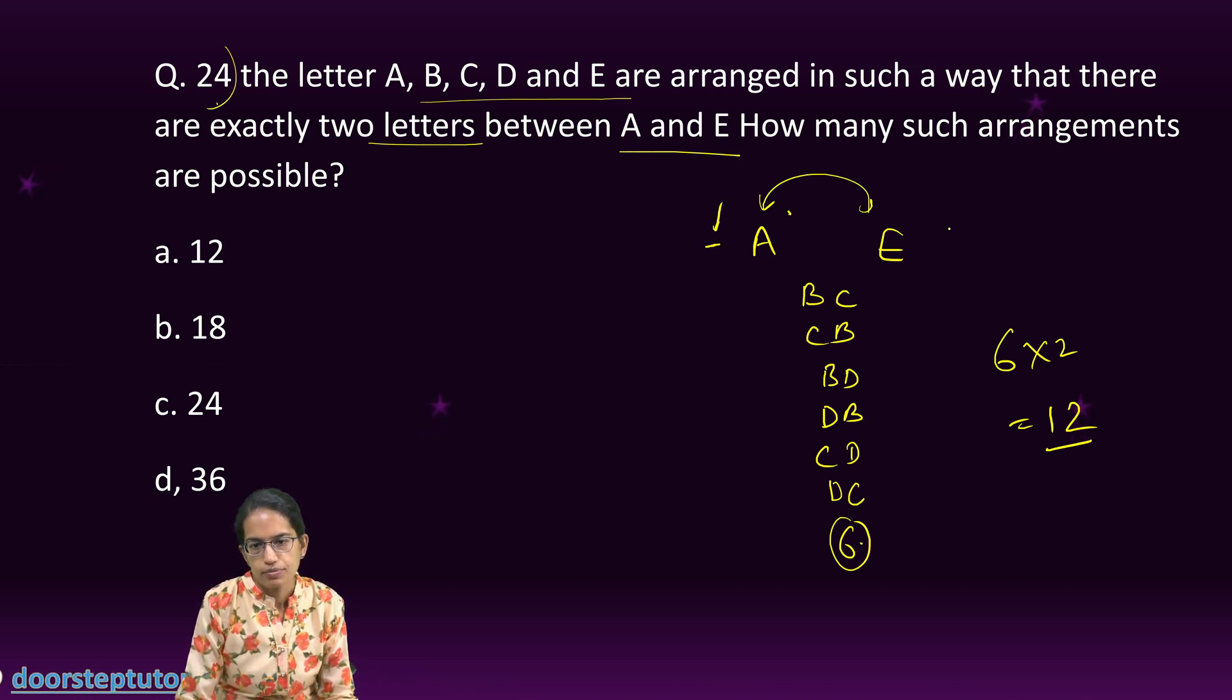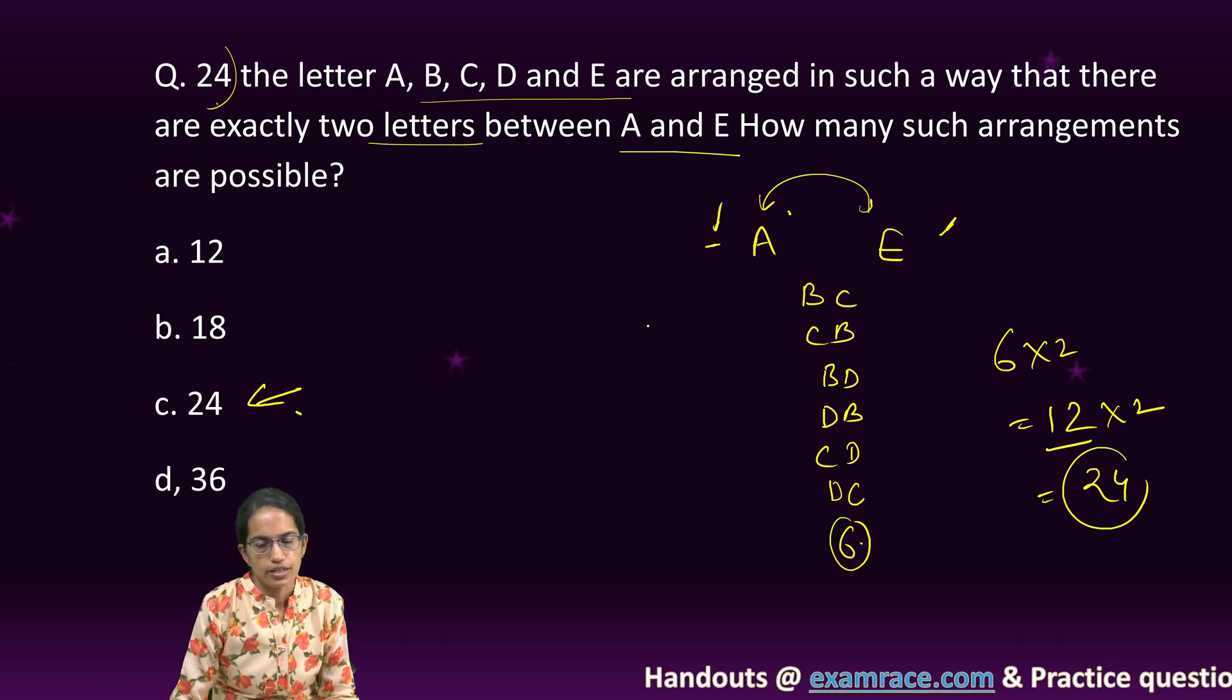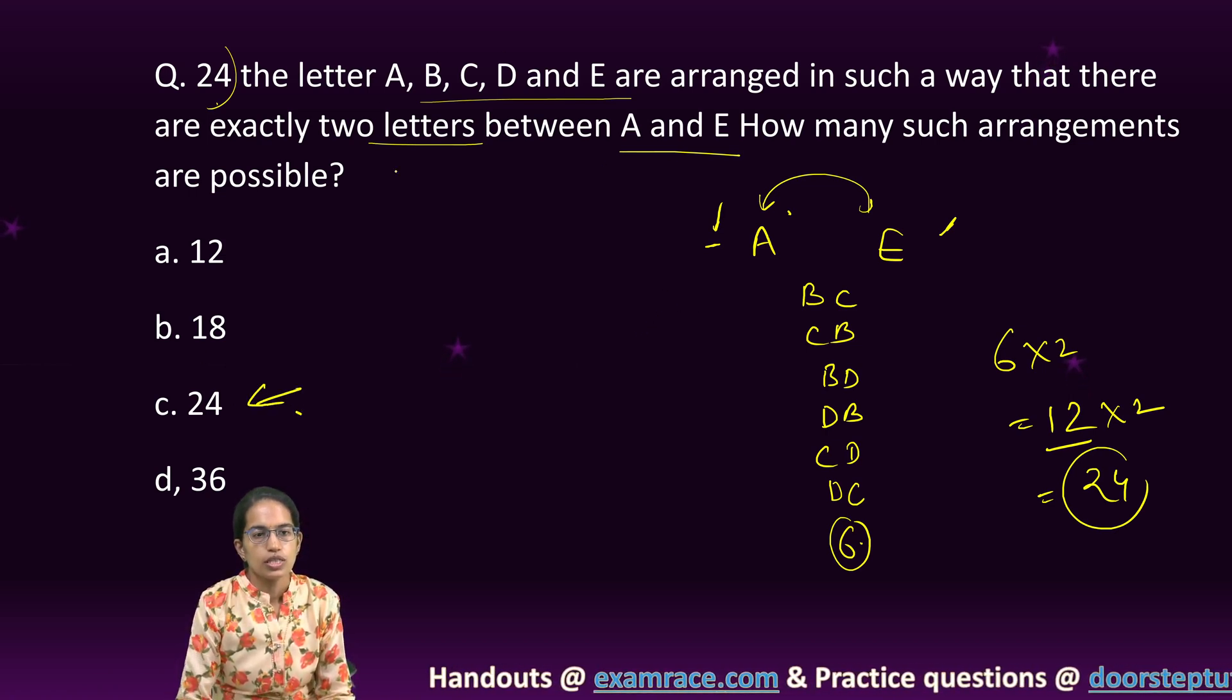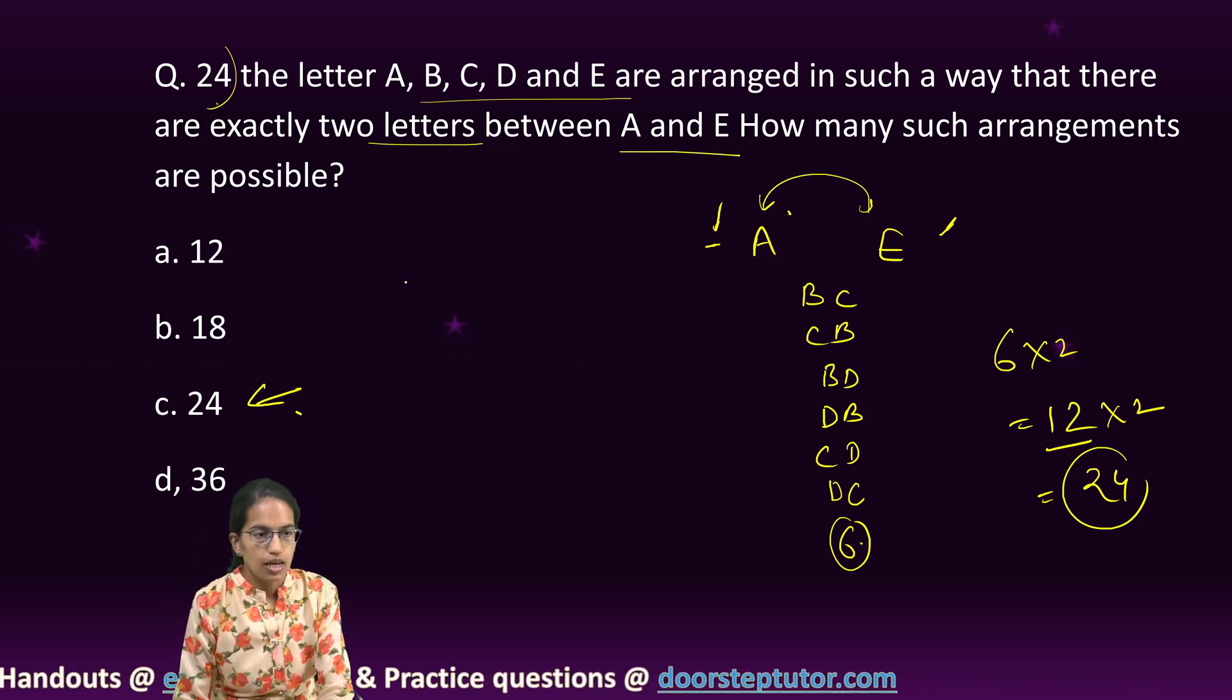Now, A and E could be interchanged. So, six into two, which is 12 and you can have one more letter. This could be either at the beginning or could be at the end. So, two more combinations. So, that is 24. So, 24 becomes the right option. These are the ways through which you can possibly arrange these letters.